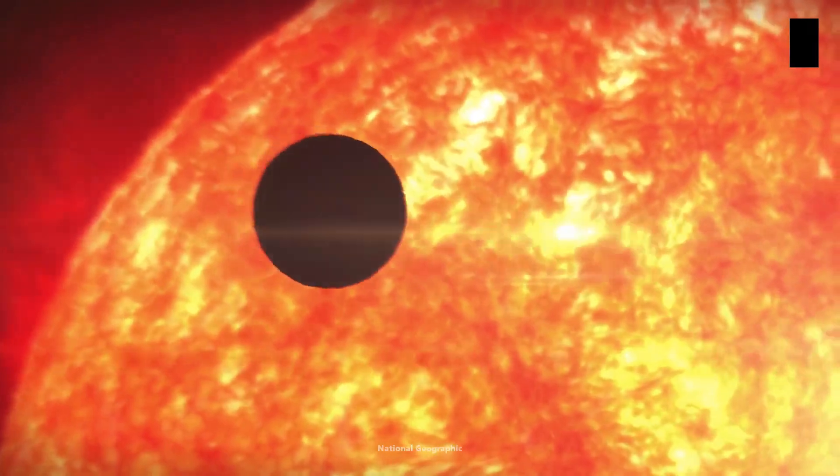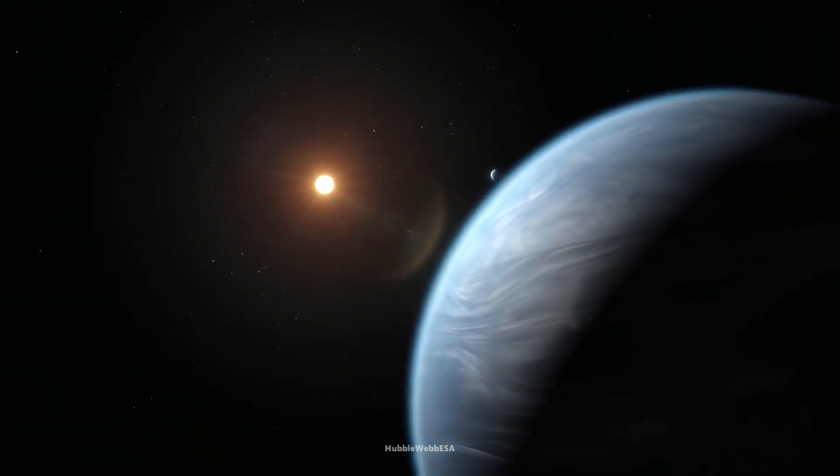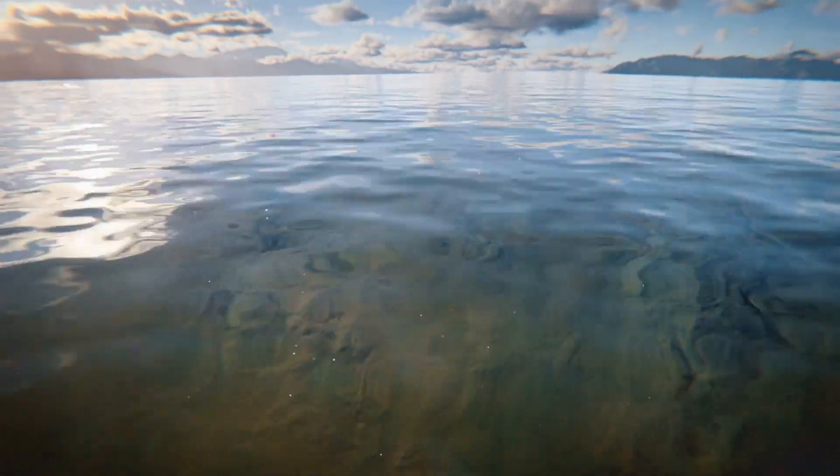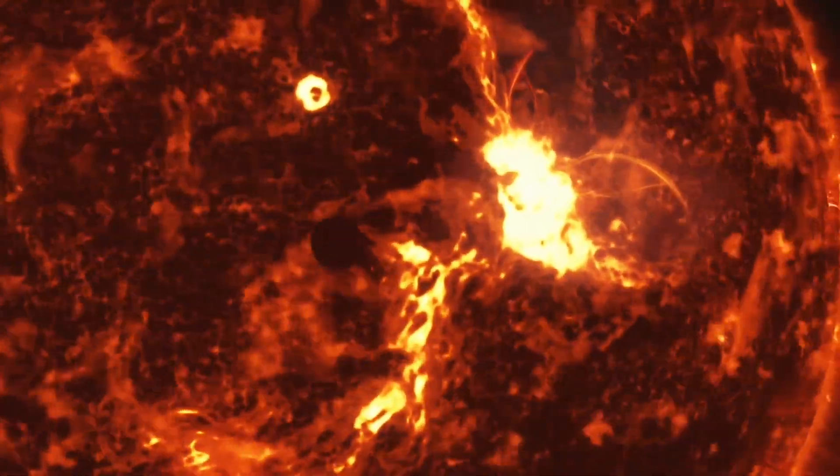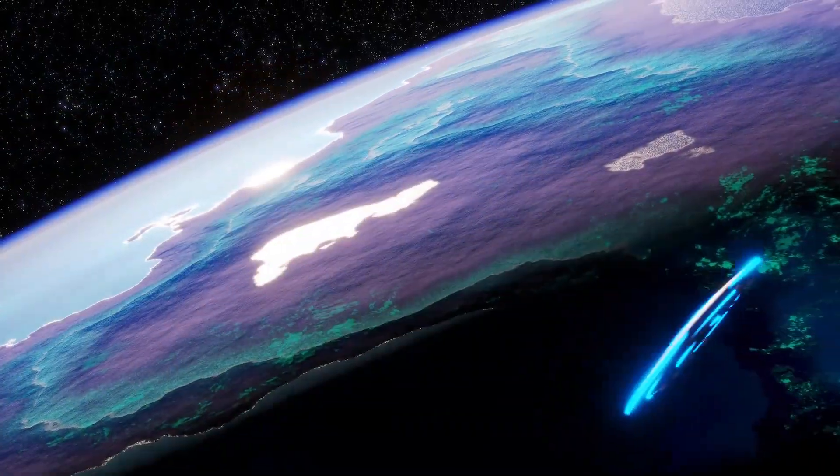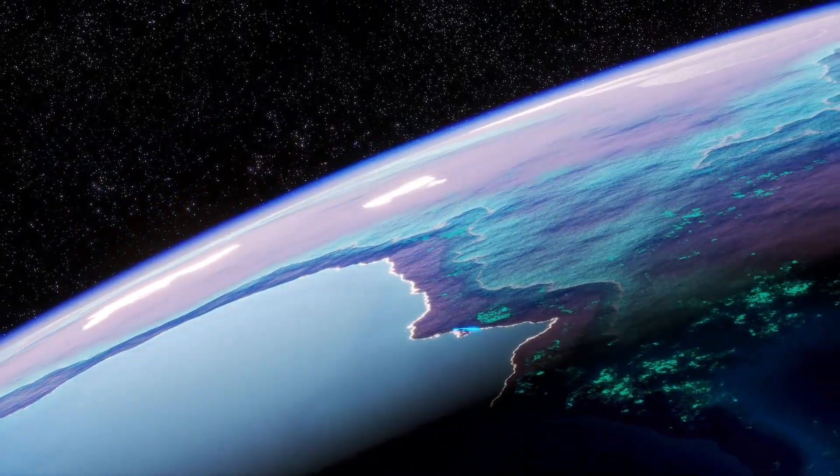Now, let's get down to the nitty-gritty of habitability. Proxima Centauri b is in the habitable zone, where conditions might be just right for liquid water. But those stellar flares from Proxima Centauri could be a real game-changer. It's not all sunshine and rainbows in the exoplanet world.